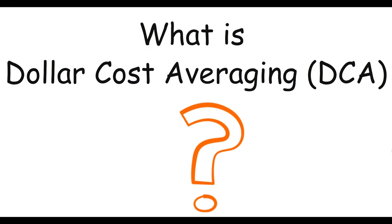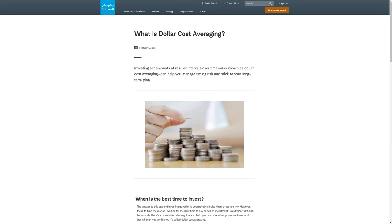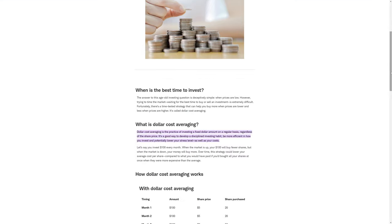What is dollar cost averaging? It's the practice of investing set amounts at regular intervals over time. Dollar cost averaging is investing a fixed dollar amount on a regular basis regardless of the share price or the crypto price. It's a good way to develop a disciplined investing habit, be more efficient in how you invest, and potentially lower your stress level as well as your costs.